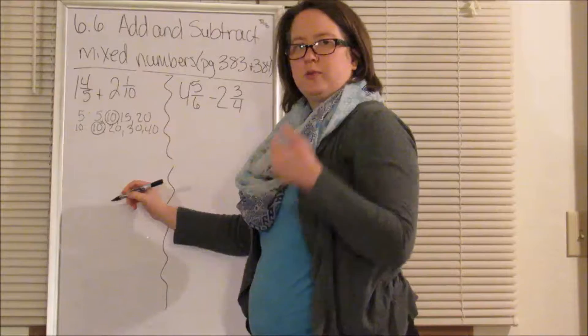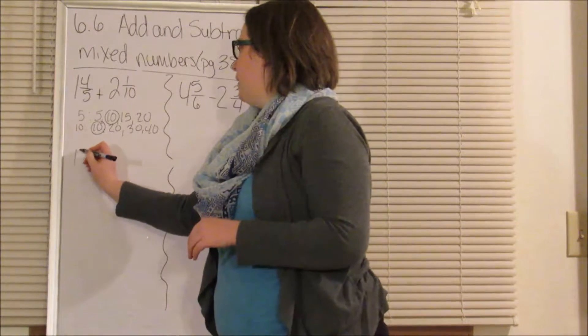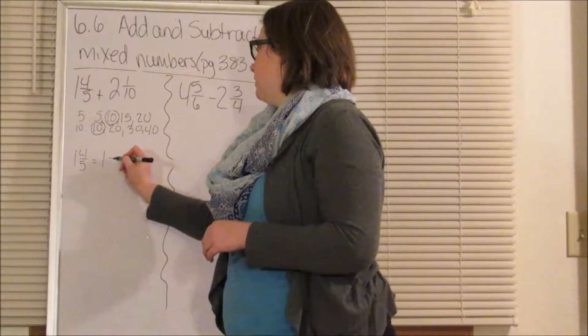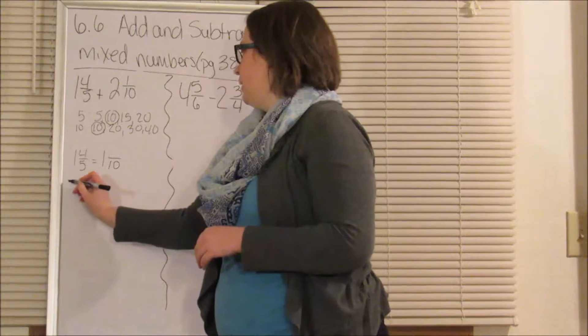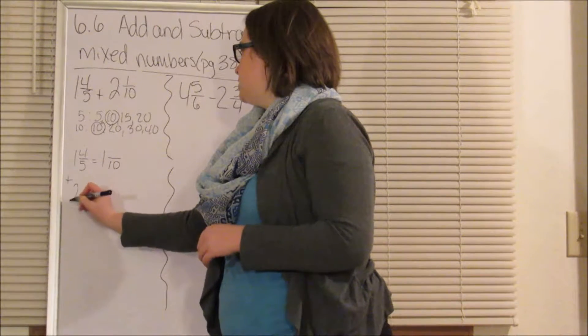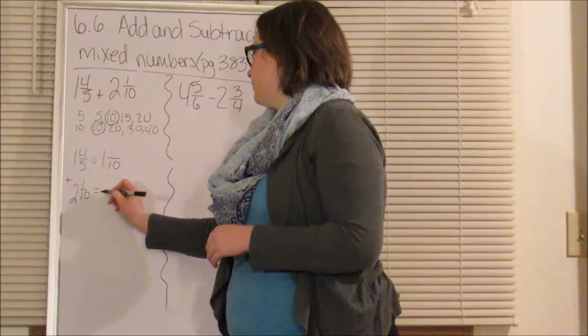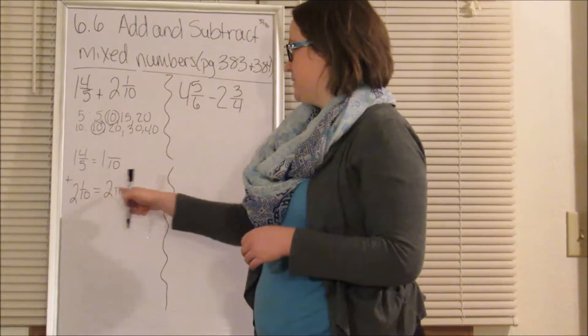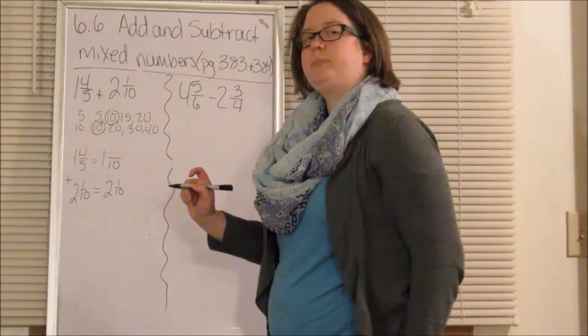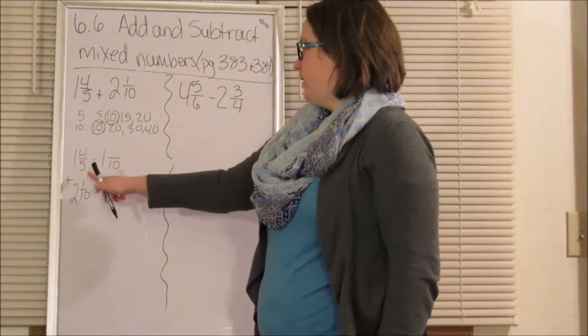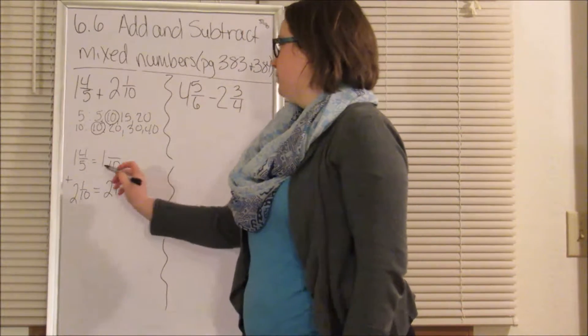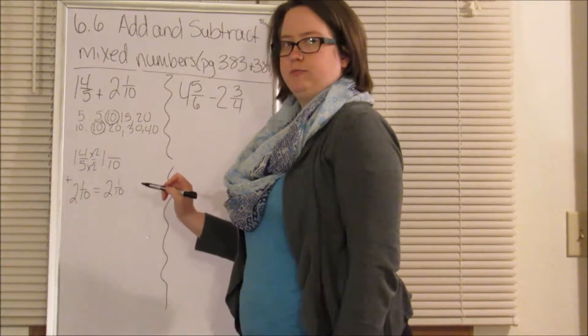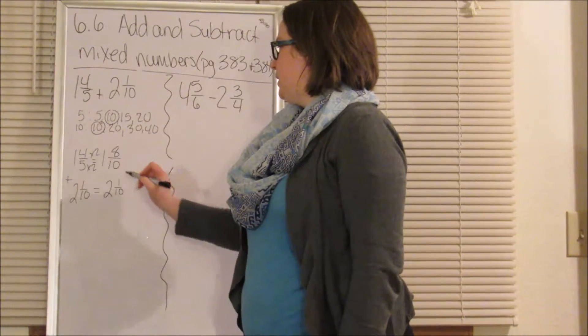So we're going to rewrite these so that we can make equivalent fractions. 1 and 4 fifths equals 1 and something over 10. Well, this one, because the 10 stays the same, the 1 is going to stay the same. Now, if we're looking here, what do we do to 5 in order to get 10? Well, we multiply it by 2. So we're going to multiply the 4 by 2. 4 times 2 is 8.